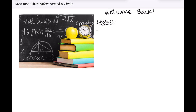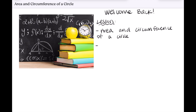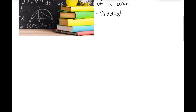If you guys didn't watch the last video, we went through the area and perimeter of triangles, squares, and rectangles. I would definitely recommend watching that one first, prior to this one, just so we understand the difference of area and perimeter versus circumference. So in today's lesson, we're going to go over what area and circumference of a circle are, and then, as always, we're going to get into our practice.